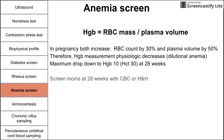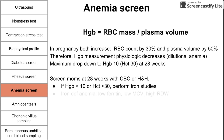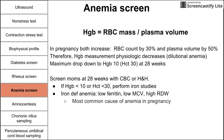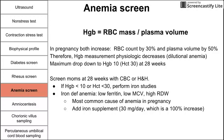You screen mom at 28 weeks gestation with a complete blood count or hemoglobin and hematocrit. If hemoglobin is less than 10 or hematocrit is less than 30, you can perform iron studies. Most commonly found is iron deficiency anemia, in which iron studies show low ferritin, low MCV, and high RDW. This is the most common cause of anemia in pregnancy, and you can treat it with iron supplements — 30 mg per day, which is a 100% increase in recommended iron intake.